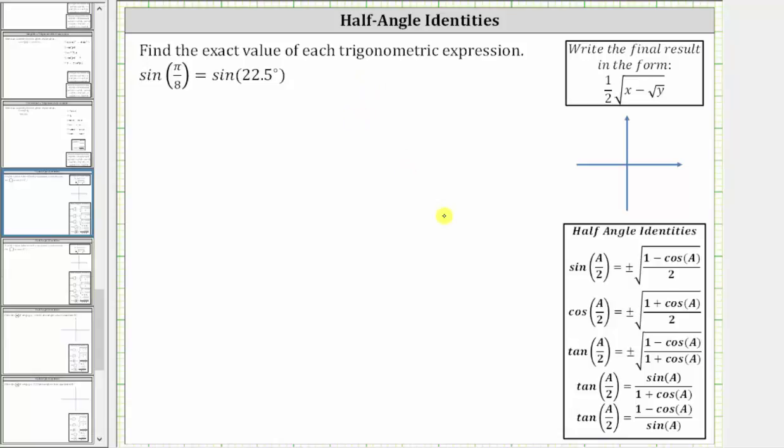In this video, we will use a half-angle identity to determine the exact value of sine pi divided by eight radians, which is equal to sine 22.5 degrees.